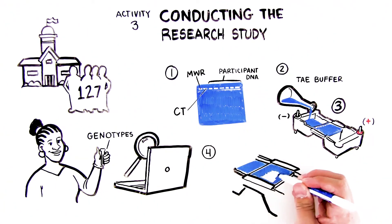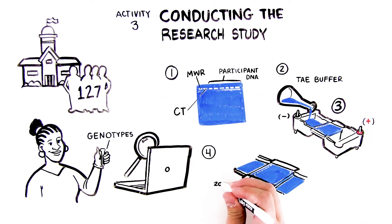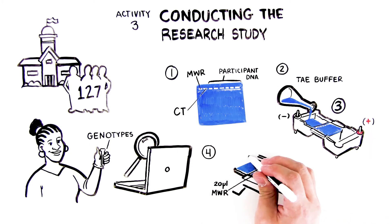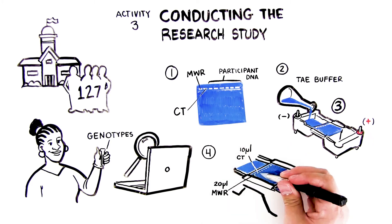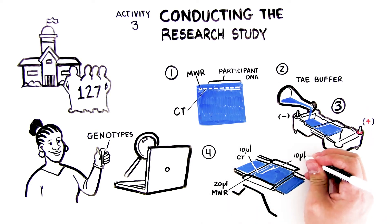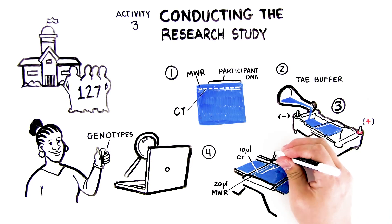Load 20 microliters of MWR in lane 1, 10 microliters of CT, controlled DNA, in lane 2, and 10 microliters of the DNA from assigned participants in lanes 3 through 8.